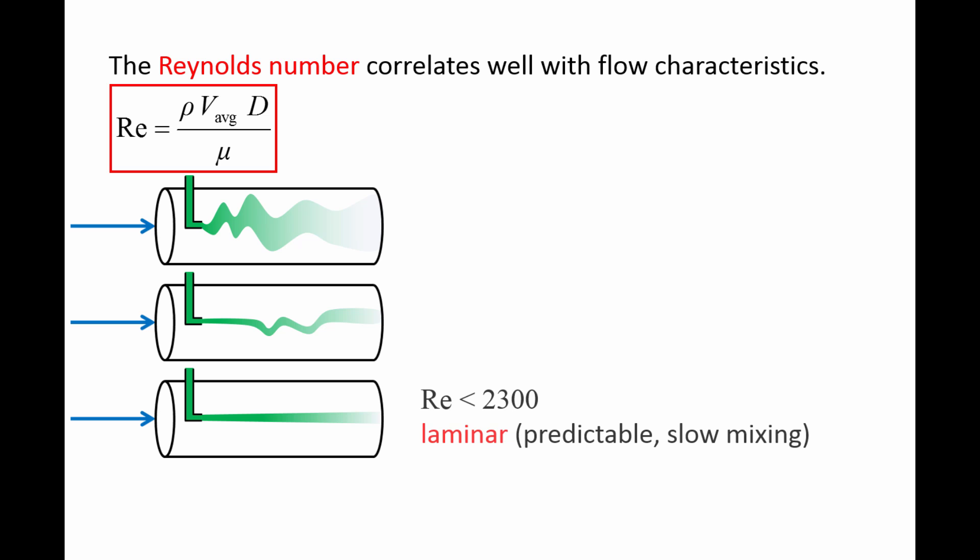The bottom pipe shows typical behavior of flows where the Reynolds number is less than 2300. We call these types of flows laminar, and they are predictable and mix slowly.